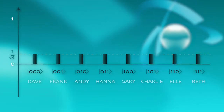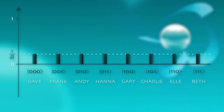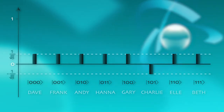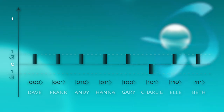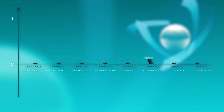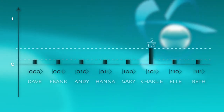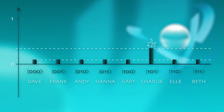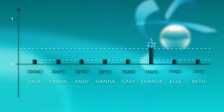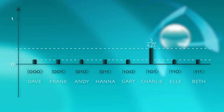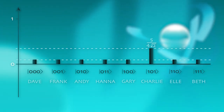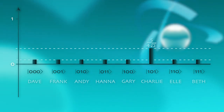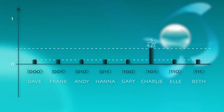Next we apply a global operation to all the qubits such that the amplitude of the code I'm looking for changes sign, whereas all the others are left untouched. Then I apply another operation that amplifies the difference between each amplitude and those of the equal superposition state. Now you see that the amplitude of the 101 code is greatly amplified because it's very far from the average, whereas the others are slightly reduced.